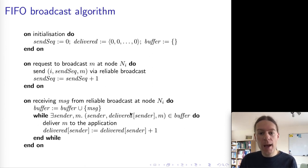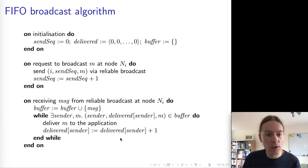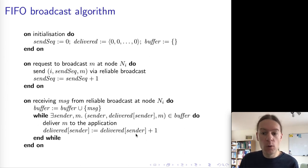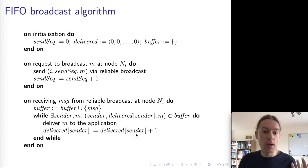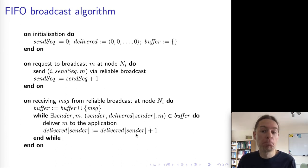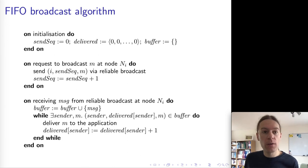If we have a message matching that, then we take that message, deliver it to the application, and increment our local vector of the number of messages we have delivered from that particular sender. And so this achieves FIFO broadcast.